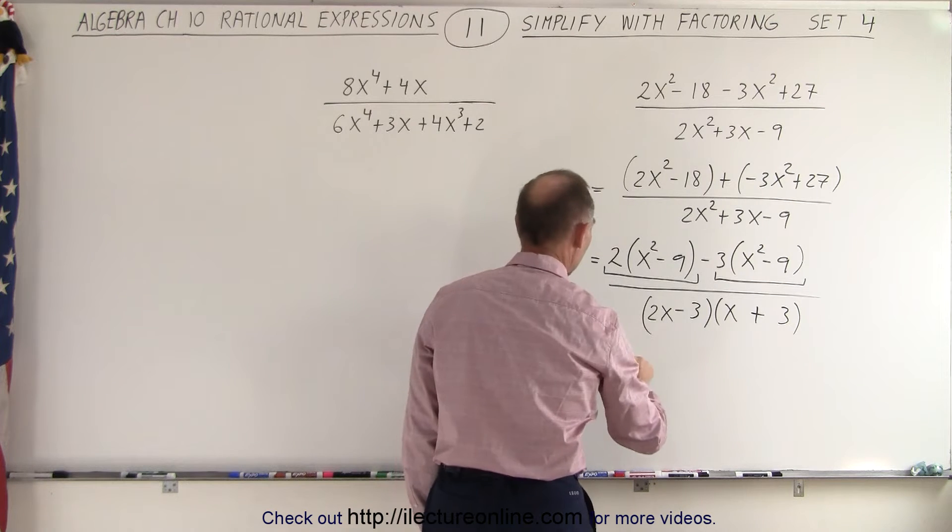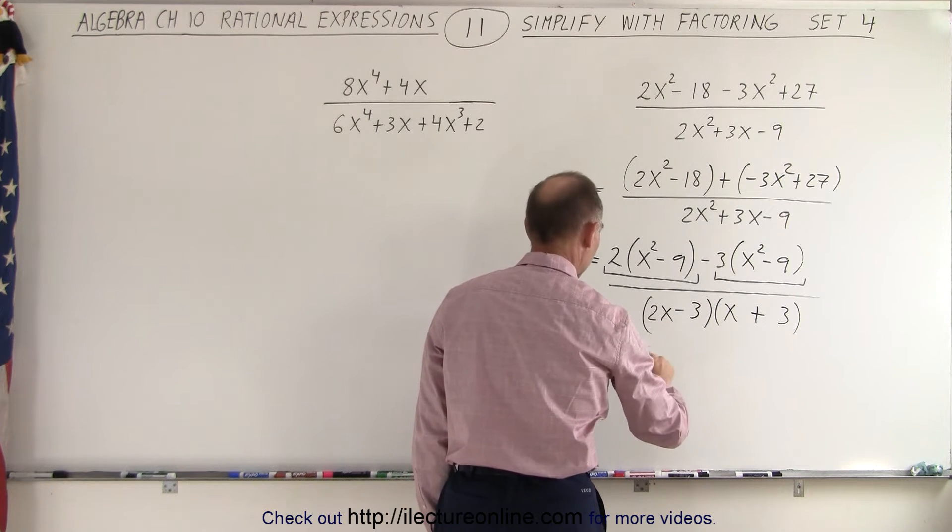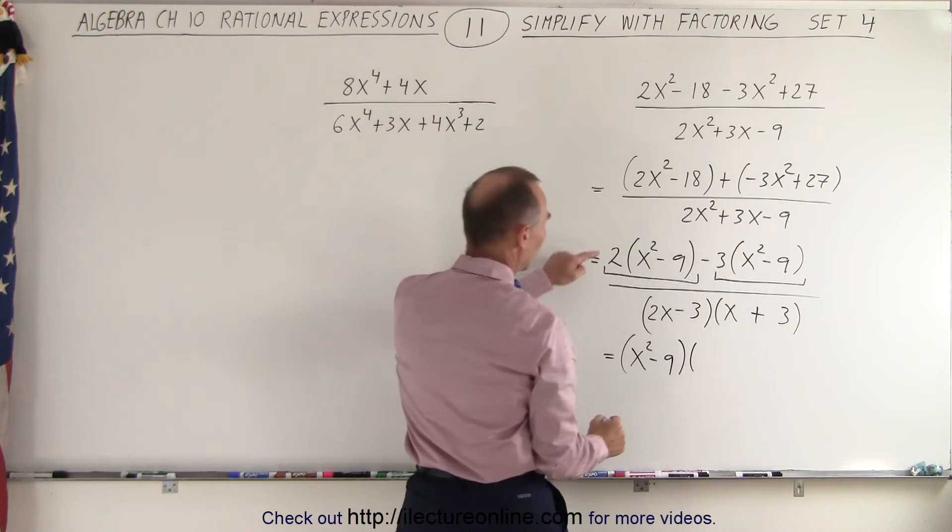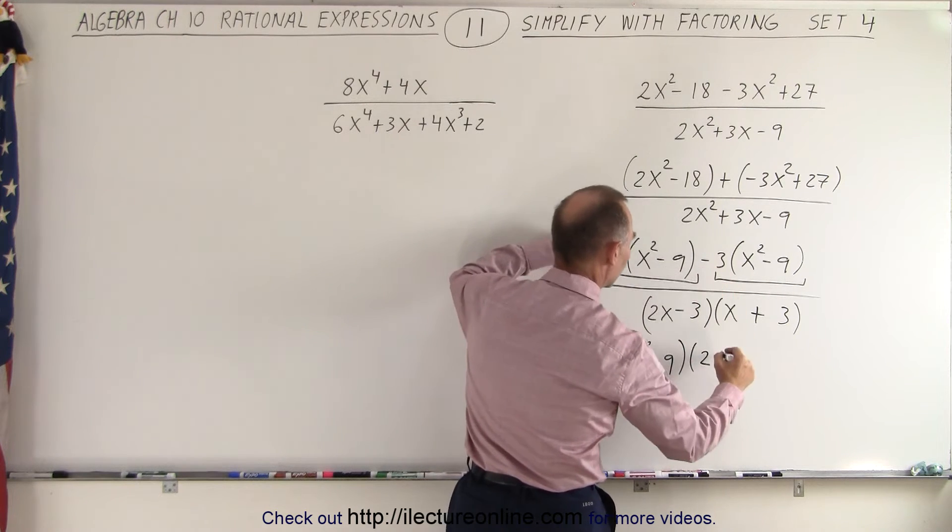In the numerator, we're going to factor out an x squared minus 9. So we have an x squared minus 9. And then we're left with a positive 2 and a minus 3.